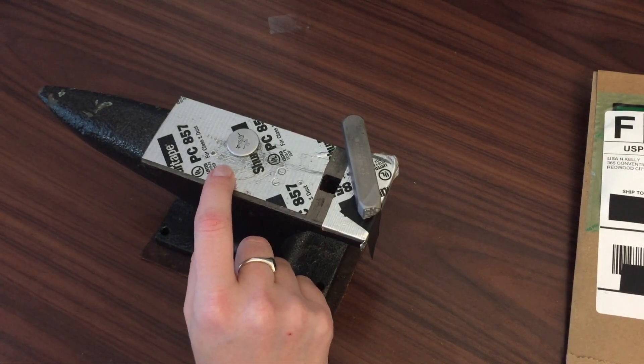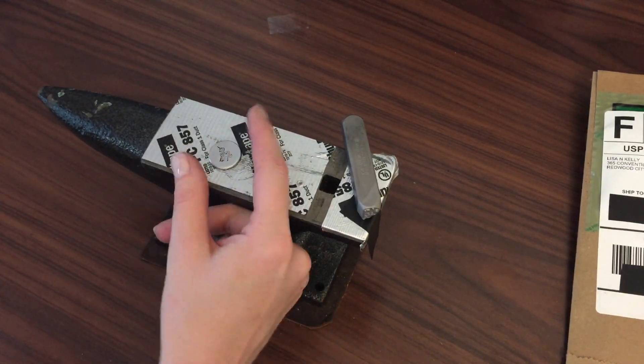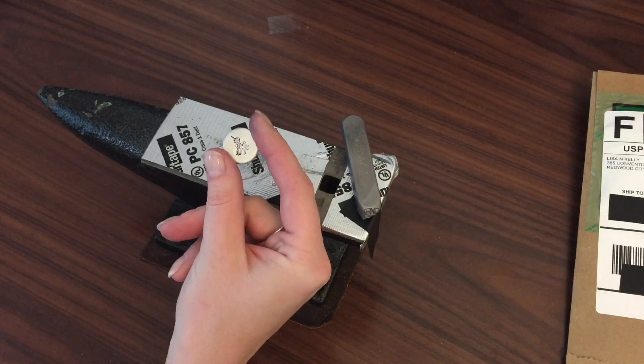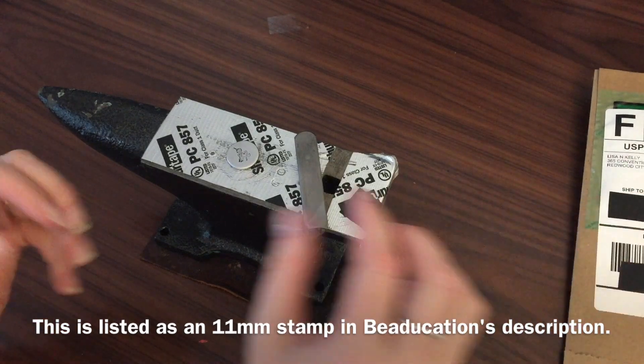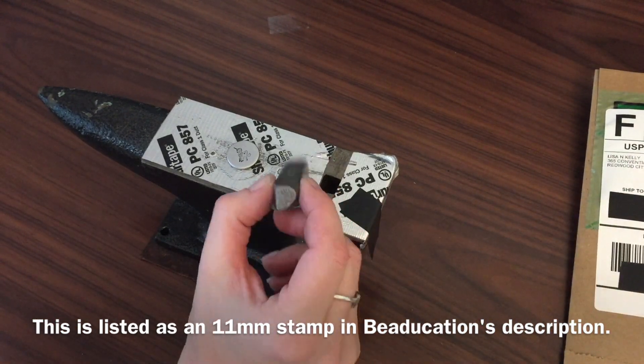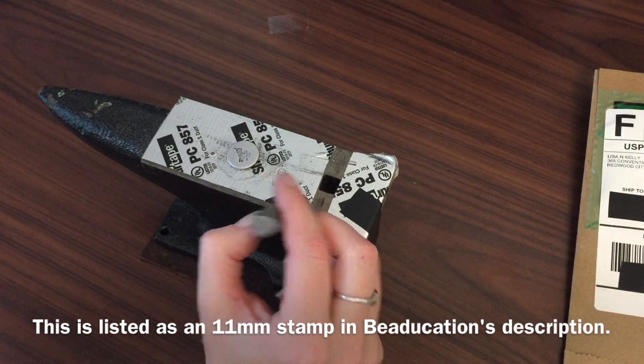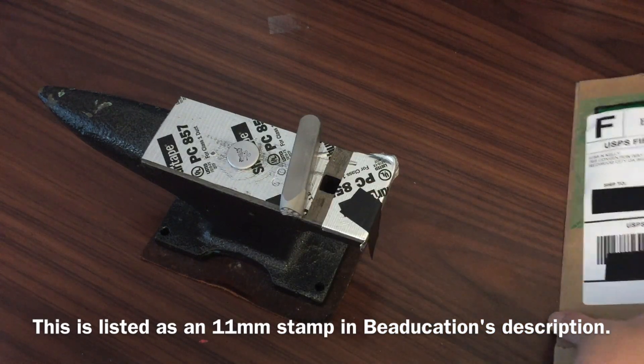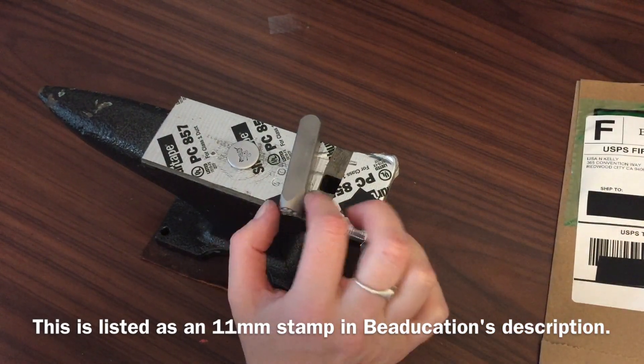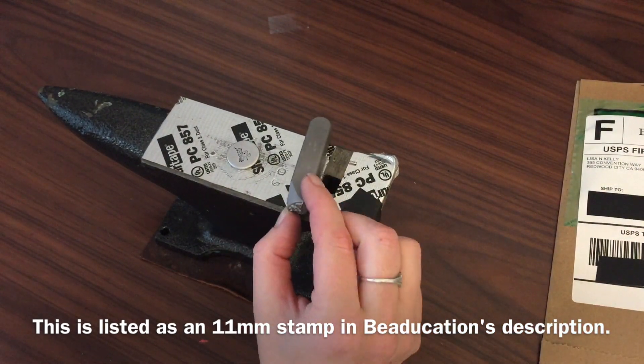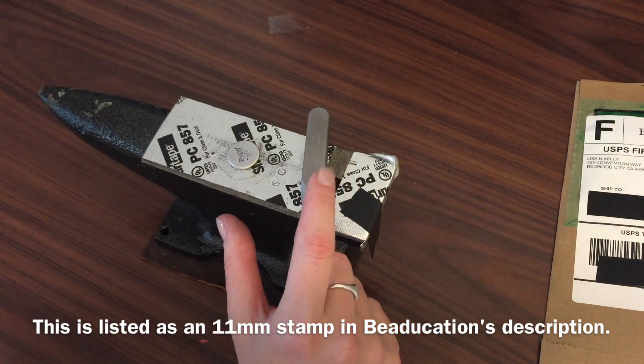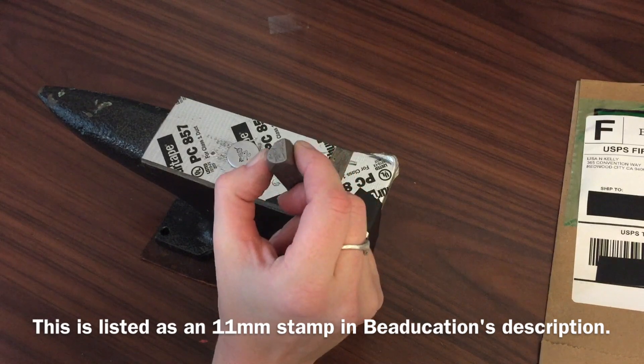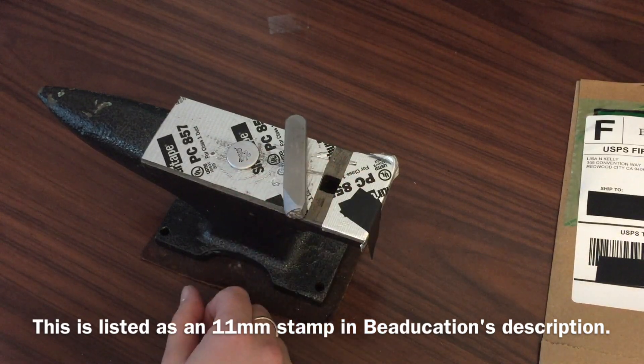So anyway, cute little full-size unicorn stamp from beaducation. I'm trying to remember what size it is. I think it was a six or eight millimeter. I'll put that in the description, what size it was, and then also a link to the listing on their website and also on Etsy where you can find this cute little unicorn stamp. Bye!